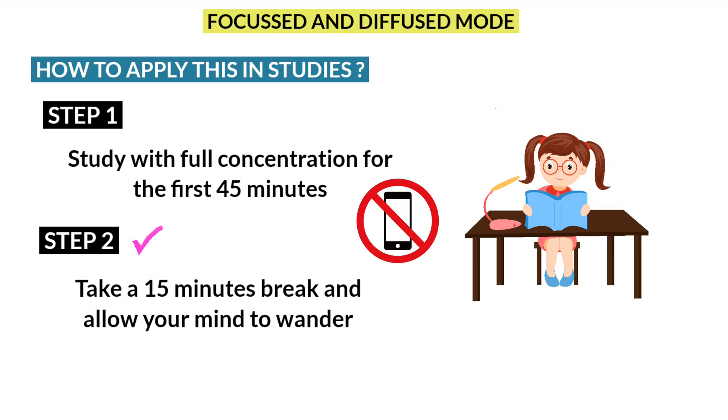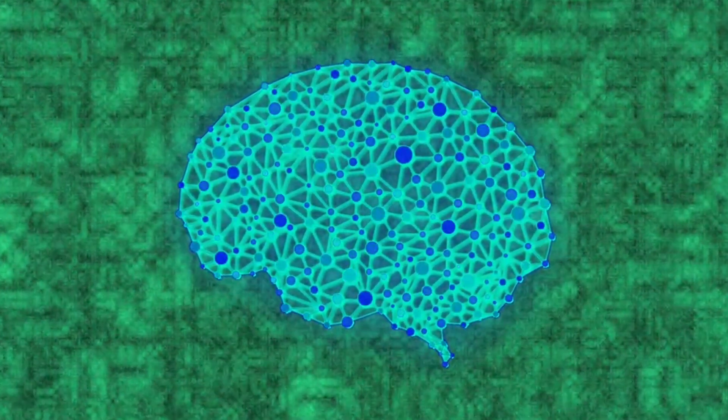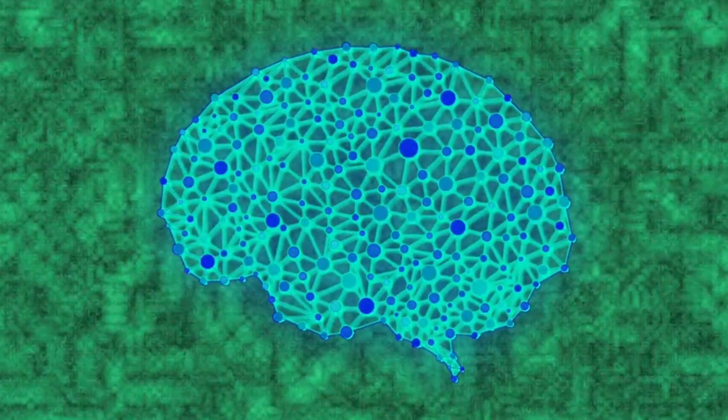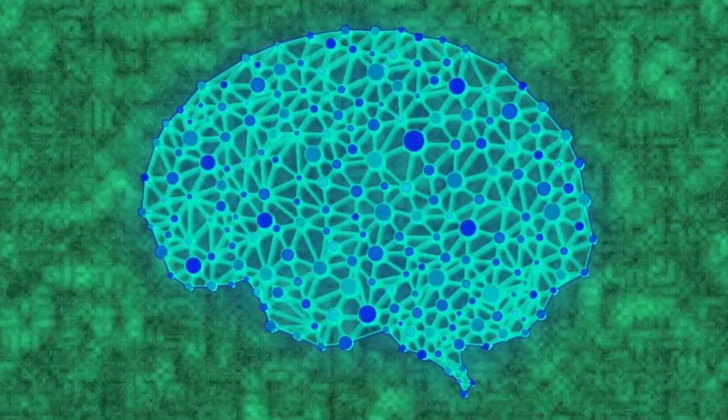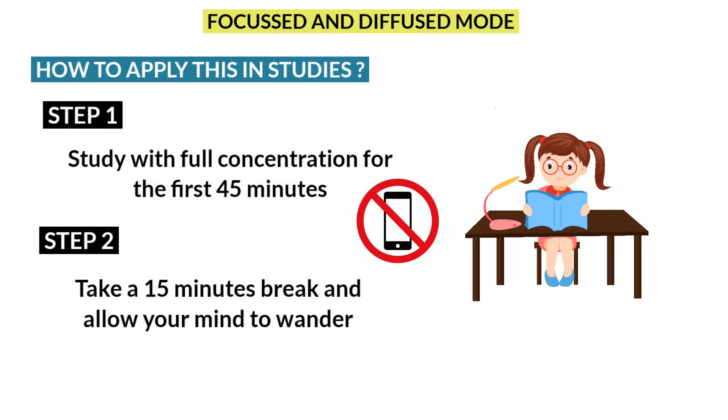And in the second step, you will be using diffuse mode of thinking. It allows your brain to link newly studied concepts to the concepts which you have already studied. Your brain establishes new connections. As a result, you get lots of creative ideas. By effectively using these two modes of thinking, you can notice improvements in your performance.